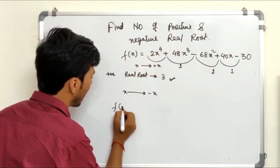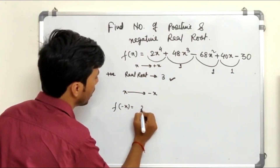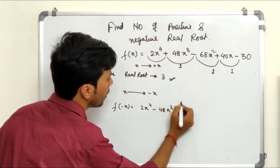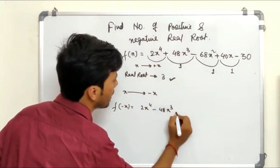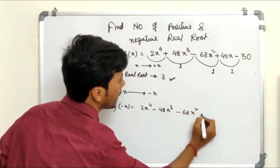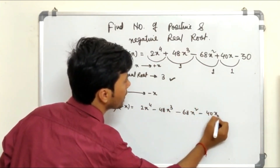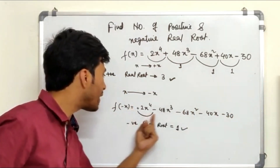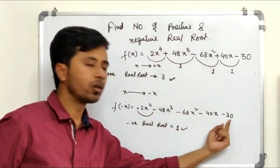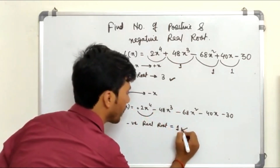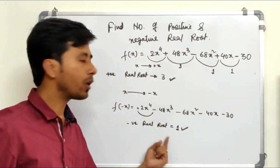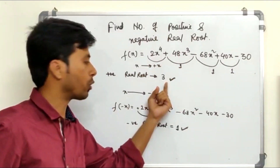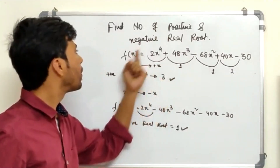After substituting -x, this gives us 48x³, then 68x², then 40x, and then minus 30 as it is. Now looking at the sign changes: there is only 1 sign change here and the rest remain the same. So there is 1 negative real root. And for positive real roots there are 3, so combining both we have 4 roots total.